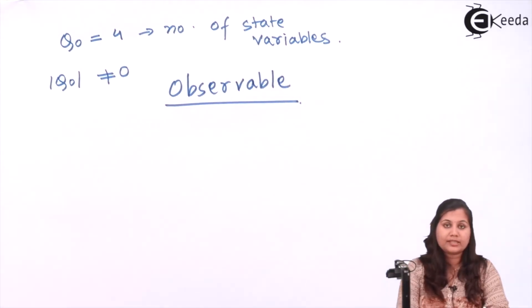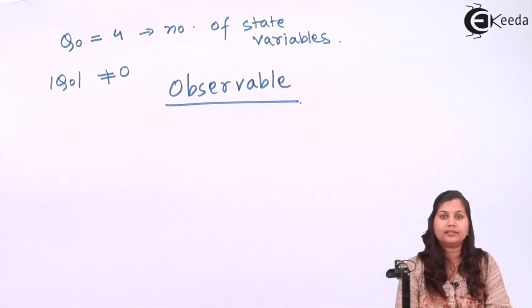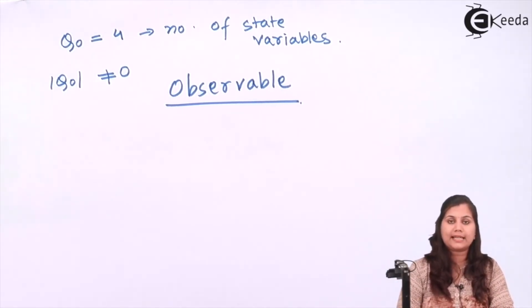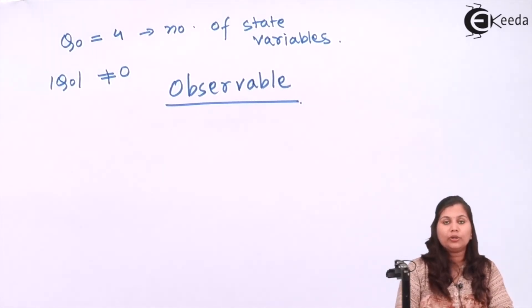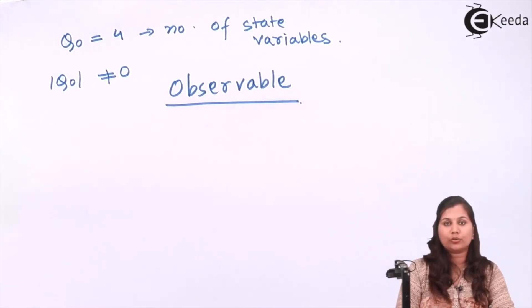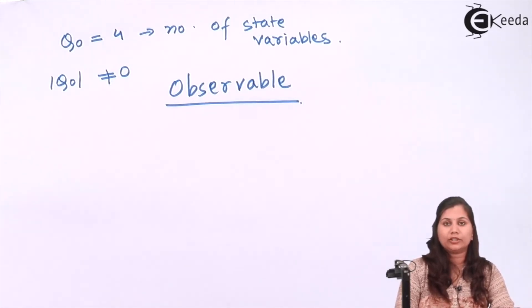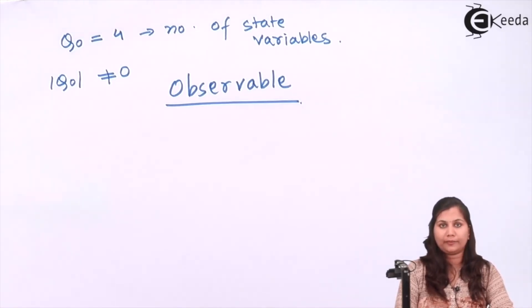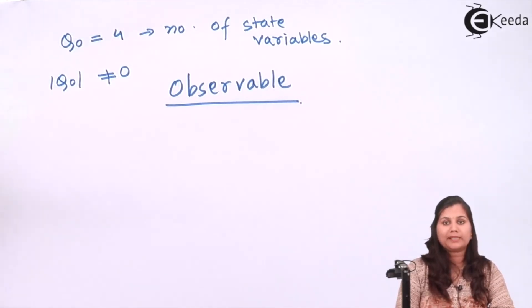So you can see that when you are given the values of matrices A, B, and C, you can easily check whether the system is controllable and observable by checking the rank of the controllability and observability test matrices QC and Q0. I hope this problem is clear to you. Thank you.